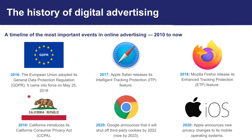In 2017, Apple released a feature called Intelligent Tracking Prevention, or ITP, which is designed to increase privacy for Safari users by preventing cross-site tracking — mainly by blocking third-party cookies and other cross-site tracking techniques. In 2018, Mozilla introduced a privacy feature called Enhanced Tracking Protection, or ETP, which is similar to Safari's ITP in that it aims to prevent cross-site tracking by blocking third-party cookies and other cross-site tracking techniques.